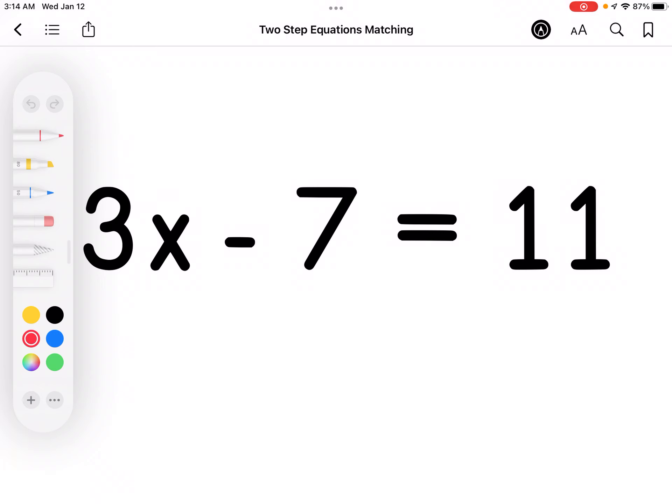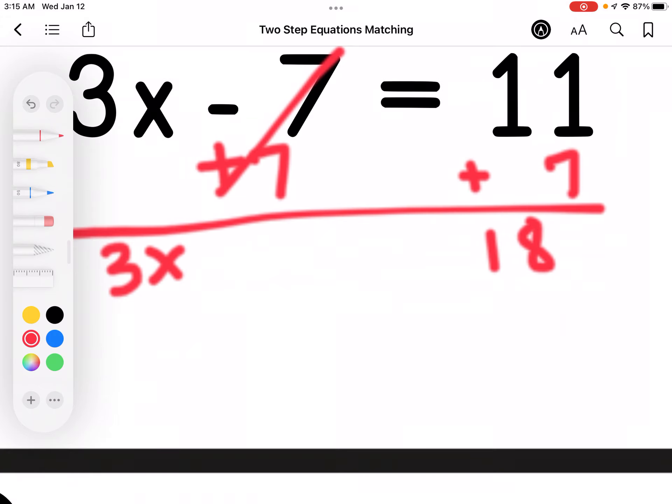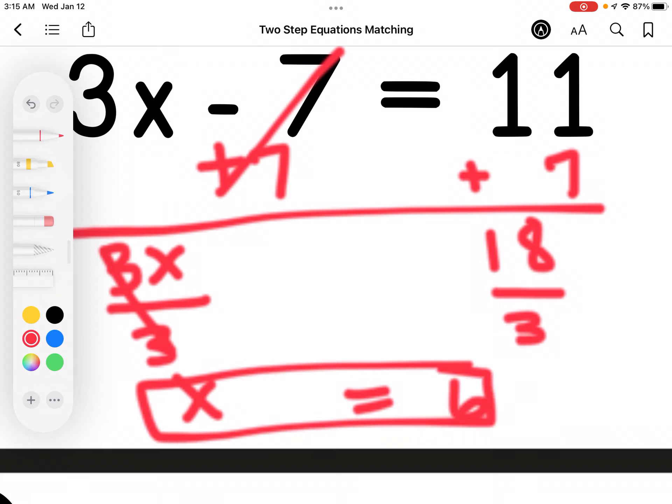Remember the goal is to get the variable by itself. So I'm either going to add or subtract first. In this case because I've subtracted 7 from x, I'm going to add 7 and I get 18. I bring down my 3x. Then because I've multiplied by 3, I'm going to divide by 3 on each side. So 3 divided by 3 is 1, so that leaves me with x. And 18 divided by 3 is 6. So x equals 6.